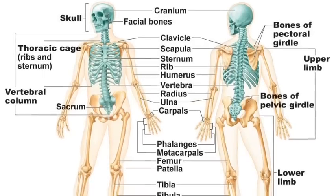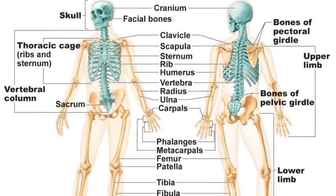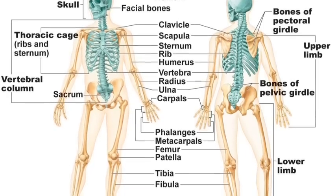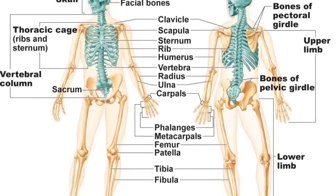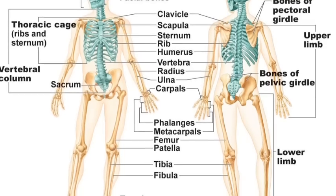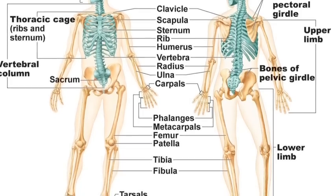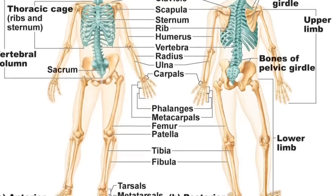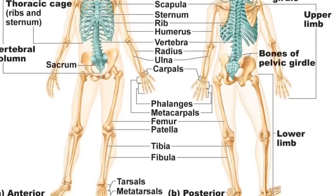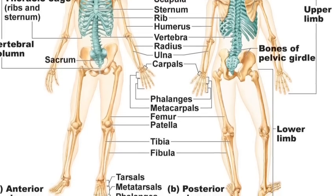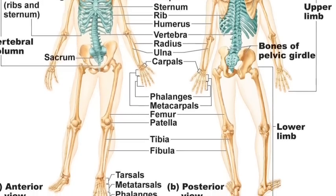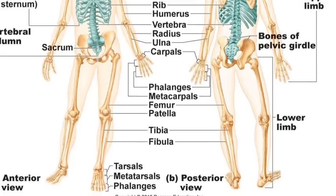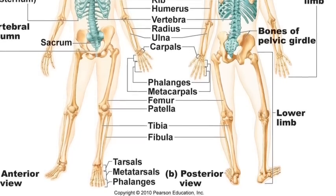This is a review of the skeletal system, which is divided into two parts. The axial skeleton includes the skull, the thoracic cage, which is the ribs and the sternum, and also the vertebral column. The appendicular skeleton is the bones of the appendages, which are the arms and the legs, and also the girdles that keep the arm and leg bones attached to the axial skeleton.